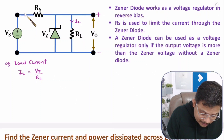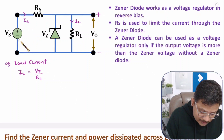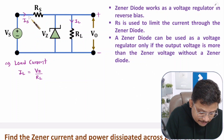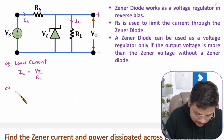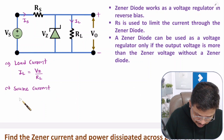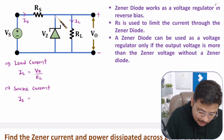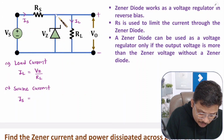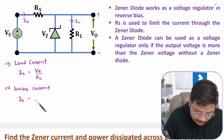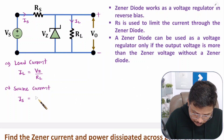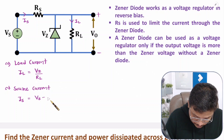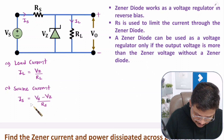If you want to calculate source current IS — the current passing through resistance RS — source current is: IS equals Vs minus Vz divided by RS. Here Vs is the supply voltage and Vz is the regulated voltage at the terminal.